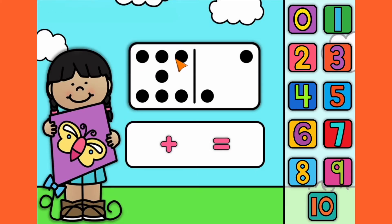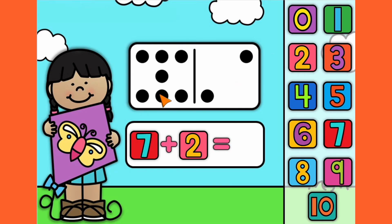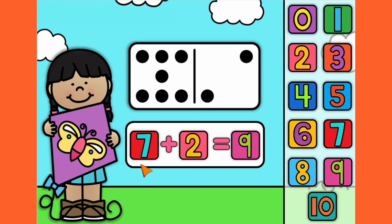Number 9. 1, 2, 3, 4, 5, 6, 7. 1, 2. Let's count them all together. 1, 2, 3, 4, 5, 6, 7, 8, 9. 7 plus 2 equals 9.